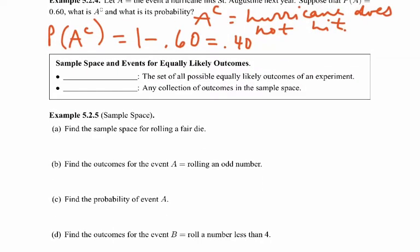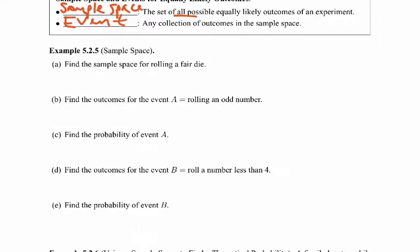Sample space — what do we mean by sample space? The sample space is the set of all possible outcomes of an experiment. It's all of the things that could happen in the experiment. An event we can think of as any collection of outcomes in the sample space. For example, find the sample space for rolling a fair six-sided die. The sample space S equals {1, 2, 3, 4, 5, 6} — we usually use capital S and list the events in brackets.